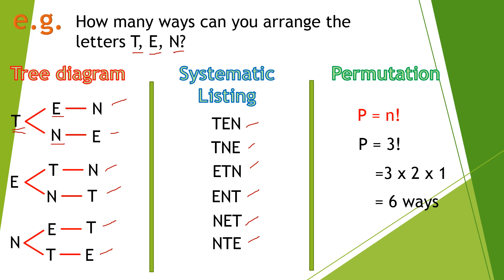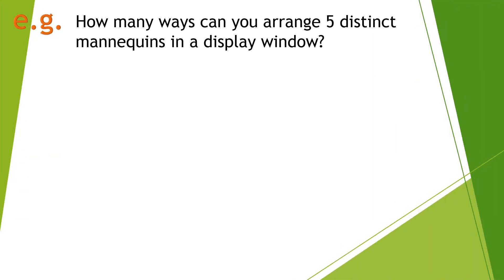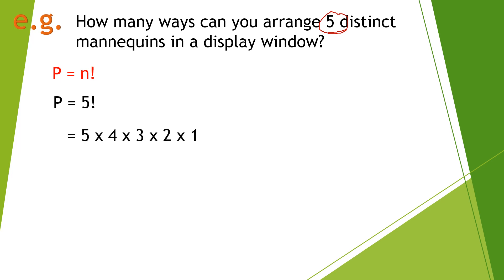Let us now have another example using the permutation notation. Example number 2: How many ways can a group of 5 distinct mannequins be arranged in a display window? Using P equals N factorial, we have 5 elements, so P equals 5 factorial, which expands to 5 times 4 times 3 times 2 times 1. Therefore, the number of ways we can arrange these mannequins is 120 ways.